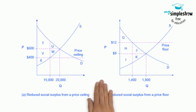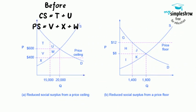Efficiency, price floors, and ceiling example. The original equilibrium price is $600 with a quantity of 20,000. Consumer surplus is T plus U, and producer surplus is V plus W plus X.